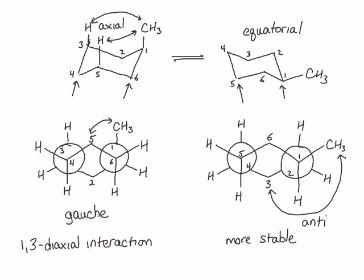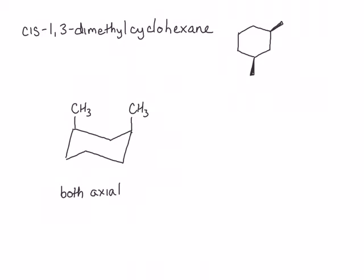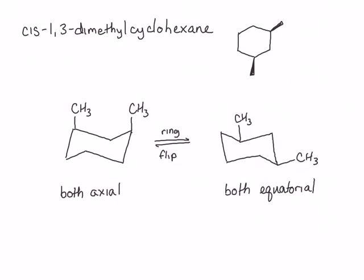These 1,3-diaxial interactions become even more important when the groups are both larger than hydrogen, such as in cis-1,3-dimethylcyclohexane. If we draw out the chair conformation, you'll see that you can put those two methyl groups either both axial or both equatorial. On the left structure we have a very unfavorable 1,3-diaxial interaction between the two methyls that is not present in the structure where both methyls are equatorial. So the di-equatorial substituted conformer is more stable than the conformer in which both methyl groups are axial.